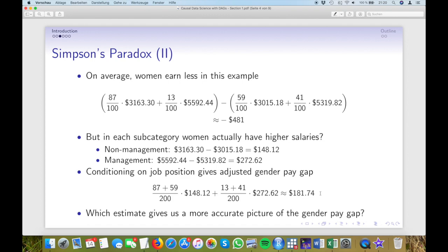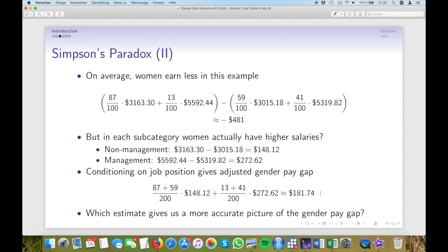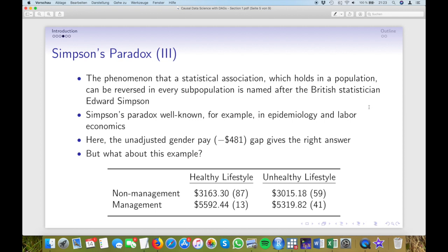But what is happening here? Why are the two answers so drastically different? And which one is correct? The phenomenon that a statistical association, like a negative correlation between gender and salary, holds in a population but can be reversed in every subpopulation, so when we distinguish between job positions, is called Simpson's paradox, named after the British statistician Edward Simpson. If you find this a bit puzzling, let me tell you, you're not alone. Generations of statisticians have struggled with it. That's why it's called a paradox after all.